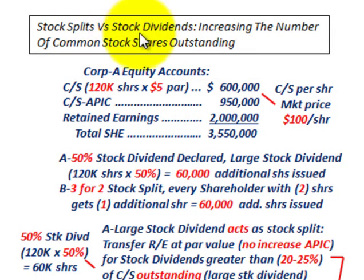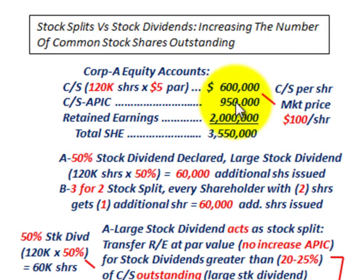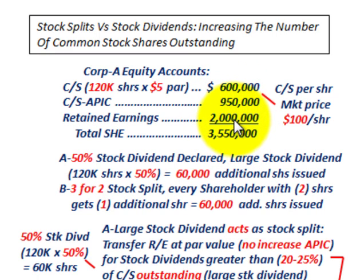What we're going to be going over here are stock splits versus stock dividends — where you're increasing the number of common shares outstanding. For our example, Corp A has these equity accounts: common stock with 120,000 shares outstanding at a $5 per share par value for a total of $600,000, additional paid-in capital of $950,000, and retained earnings of $2 million, giving total shareholders' equity of $3,550,000. Currently their common stock market price is sitting at $100 per share.